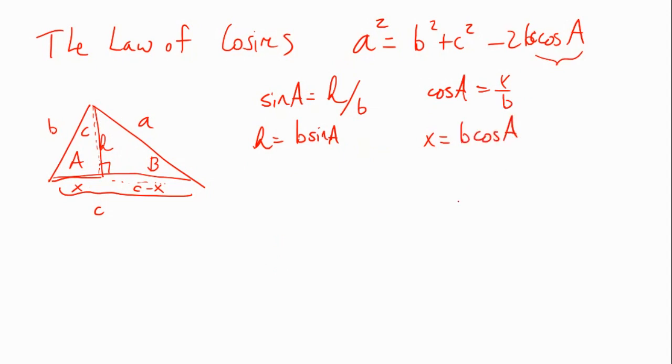That's just using the triangle on the left. Let's look at the triangle on the right. In the triangle on the right, if I took the sine of B, that would be the derivation of the law of sines. If I took the cosine of B, that's a thing I could do, but it's not going to help us here. What I want to do is apply the Pythagorean theorem.